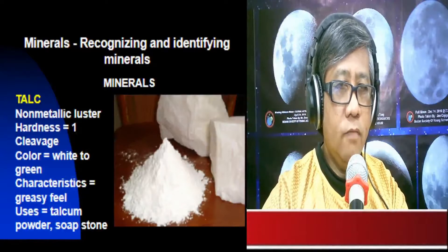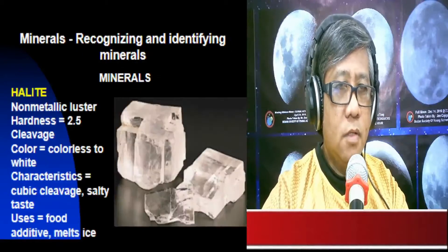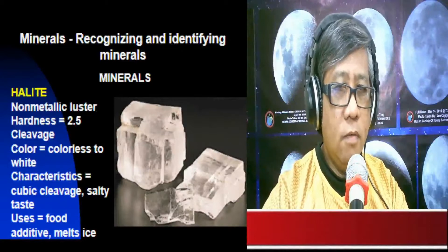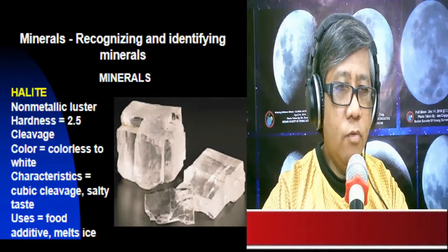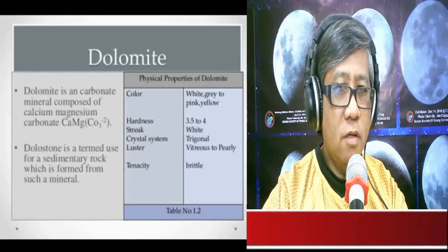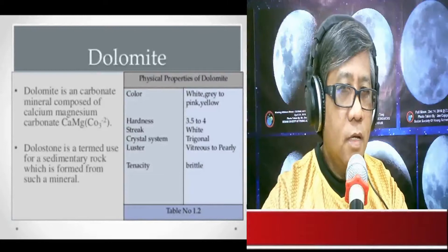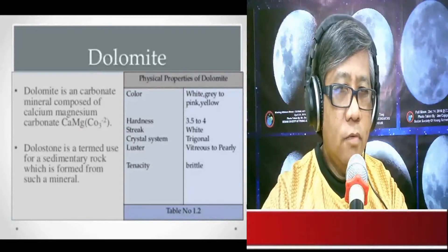Halite has non-metallic luster, hardness of 2.5, exhibits cleavage, and is colorless to white. It has cubic cleavage and a salty taste, and is used as a food additive and to melt ice. The most controversial mineral of them all is dolomite — a carbonate mineral composed of calcium magnesium carbonate. Dolomite is also the term used for a sedimentary rock formed from such a mineral.